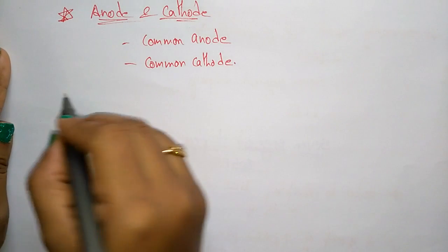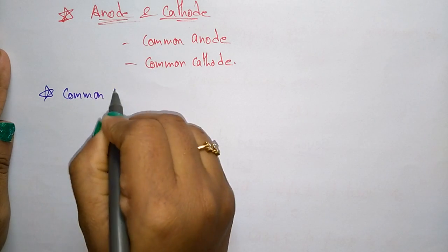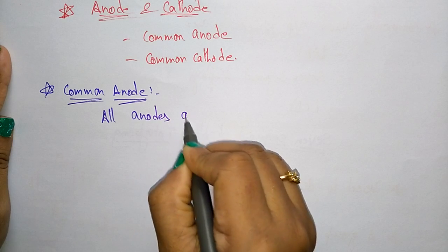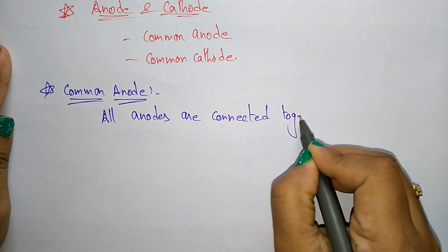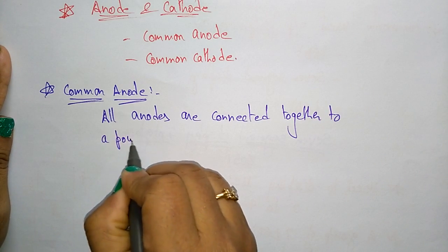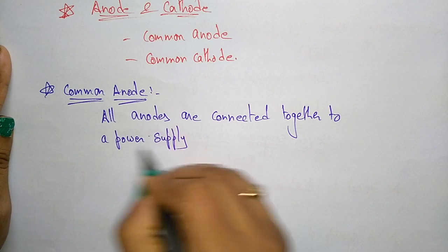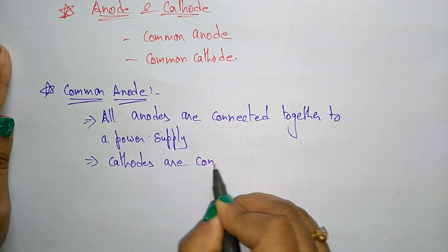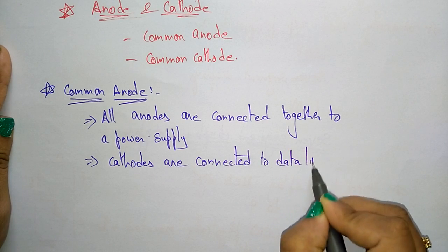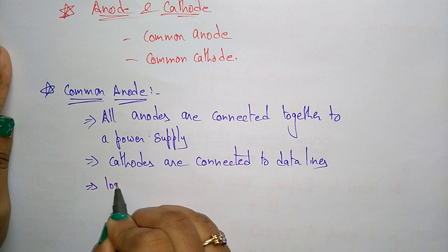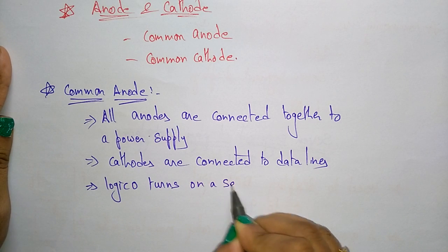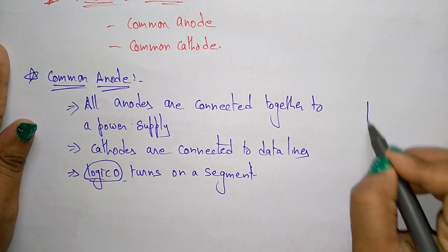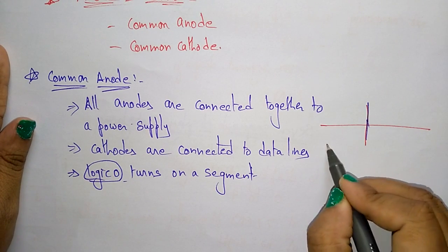In the common anode configuration, all anodes are connected together to a power supply. The cathodes are connected to the data lines. In common anode, logic 0 turns on a segment.